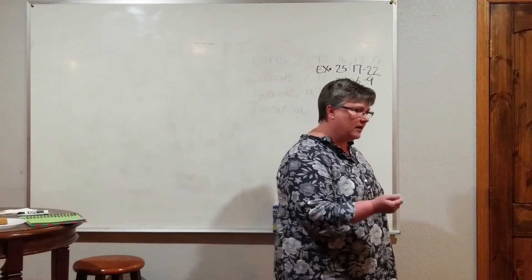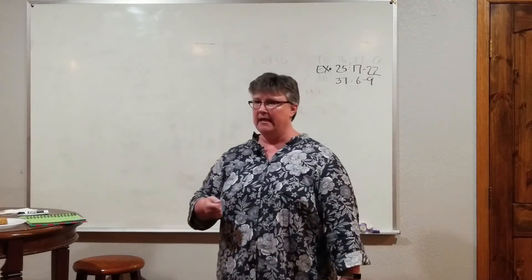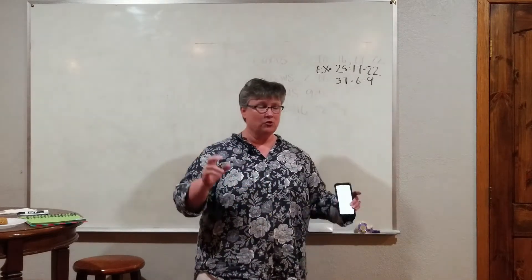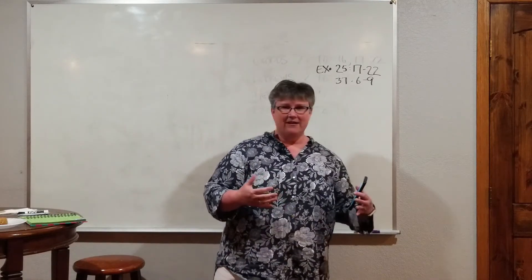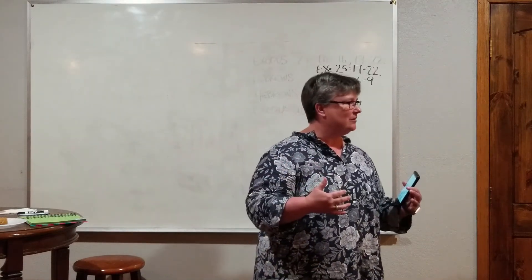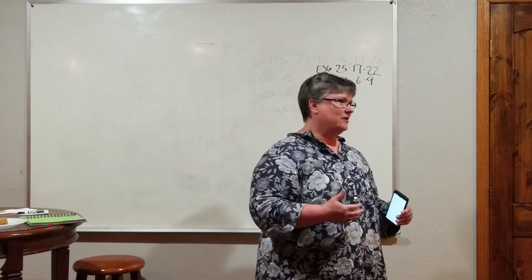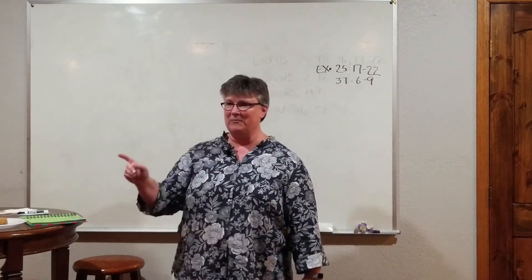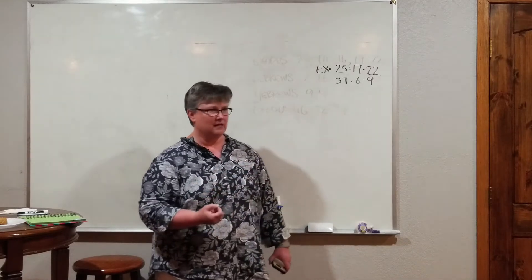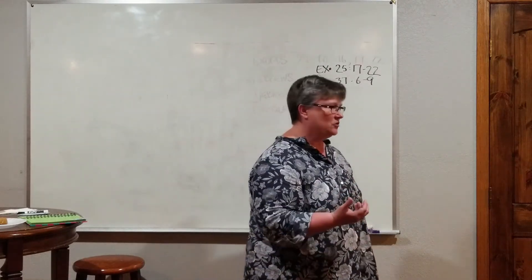Here's where the mercy seat came into practice. Once a year, the priests would go into the holiest of holies, and they would take the blood of the sacrifice and sprinkle it on the mercy seat. And that is what would give them atonement. It would wash away their sins. As God was looking down from his throne on the mercy seat, he was looking through that blood, and it covered their transgressions against the law. And that was when forgiveness could be offered.